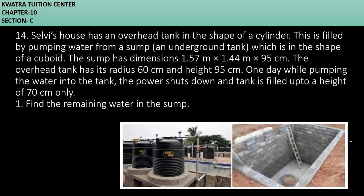The sump has dimensions of 1.57 meter, 1.44 meter, 95 centimeter. The overhead tank has its radius 60 centimeter and height 95 centimeter respectively. One day while pumping the water into the tank, the power shuts down and the tank is filled up to a height of 70 centimeter only. So they changed the height to 70 centimeter.